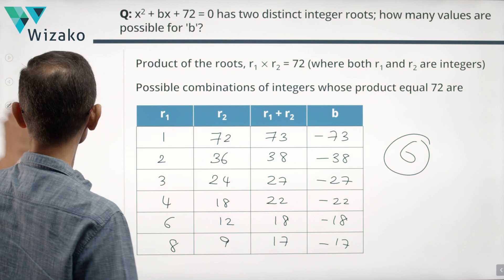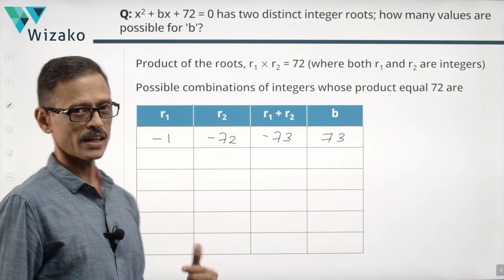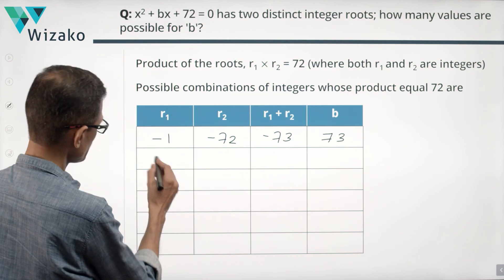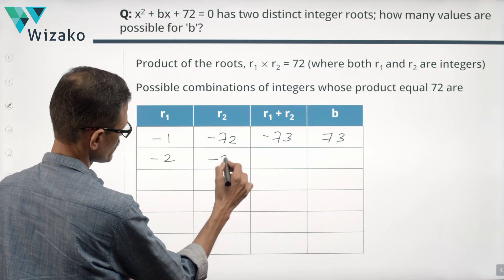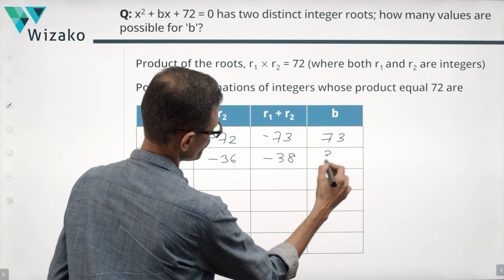For each of these values, there is going to be a corresponding positive value is what we'll be getting in this slide when both the roots are negative. So minus 73 was there. Here we have plus 73. Quickly complete this table. Minus 2, minus 36. Product is plus 72, minus 38. And the value of B is 38.